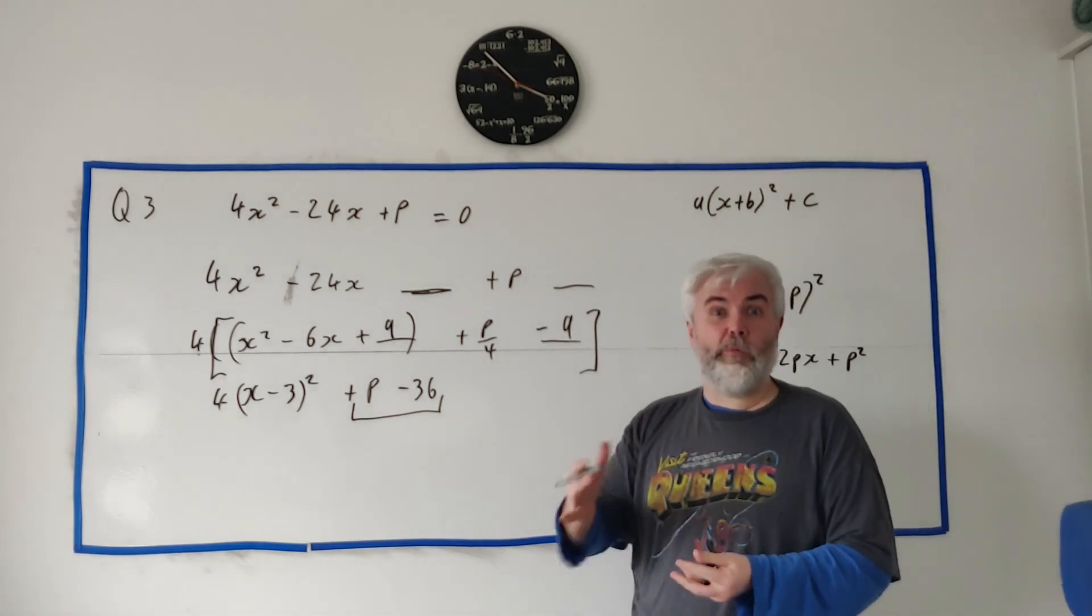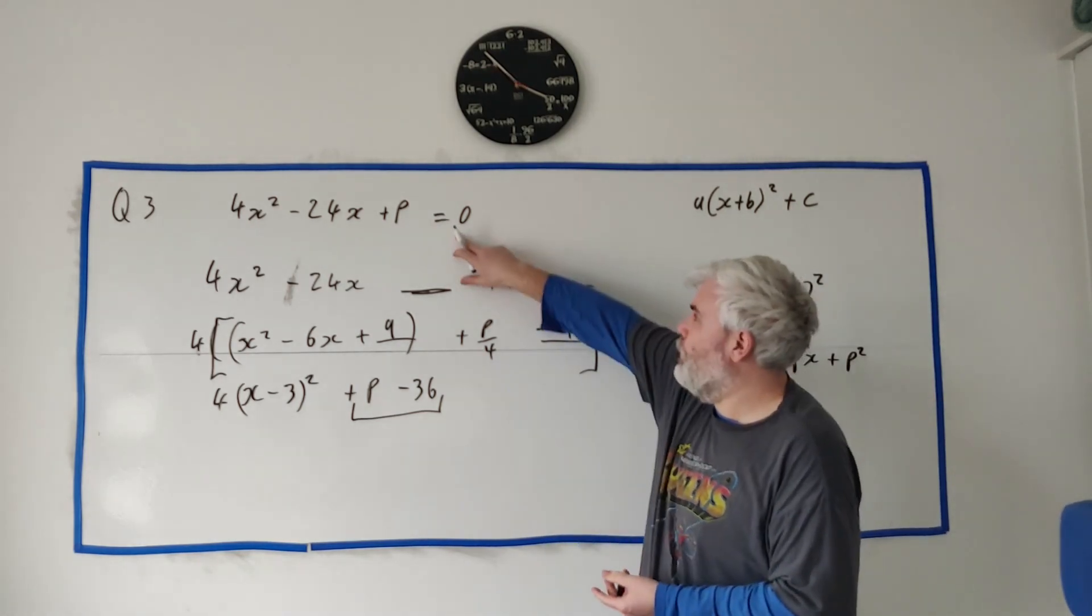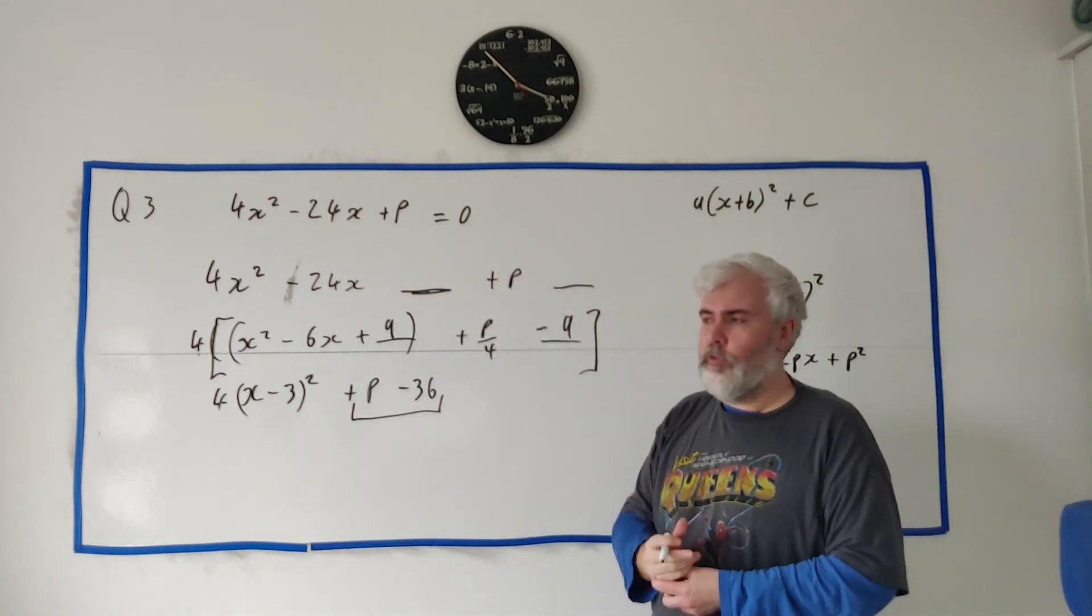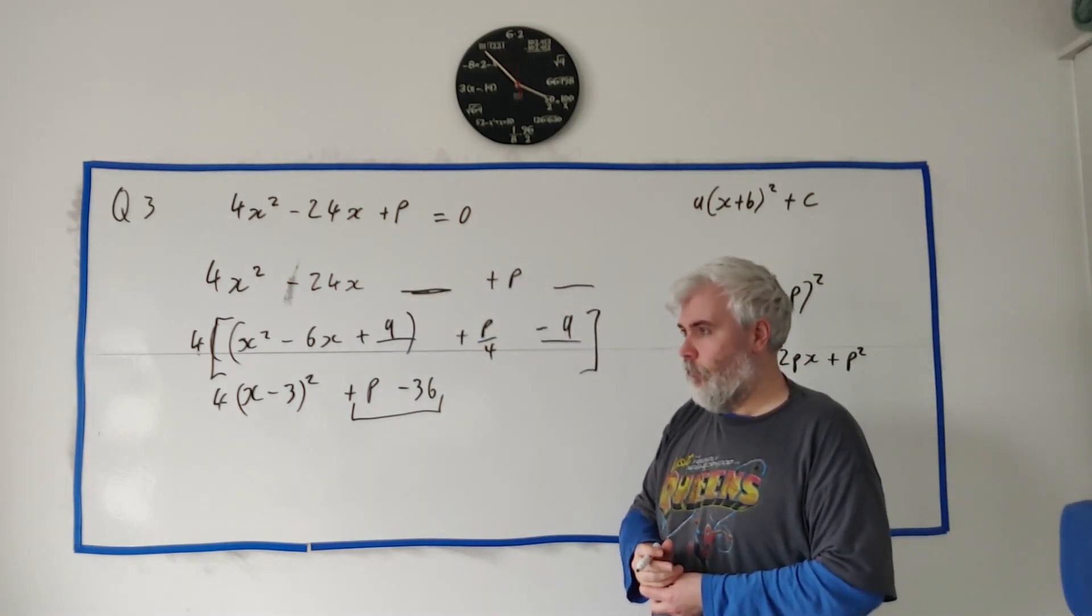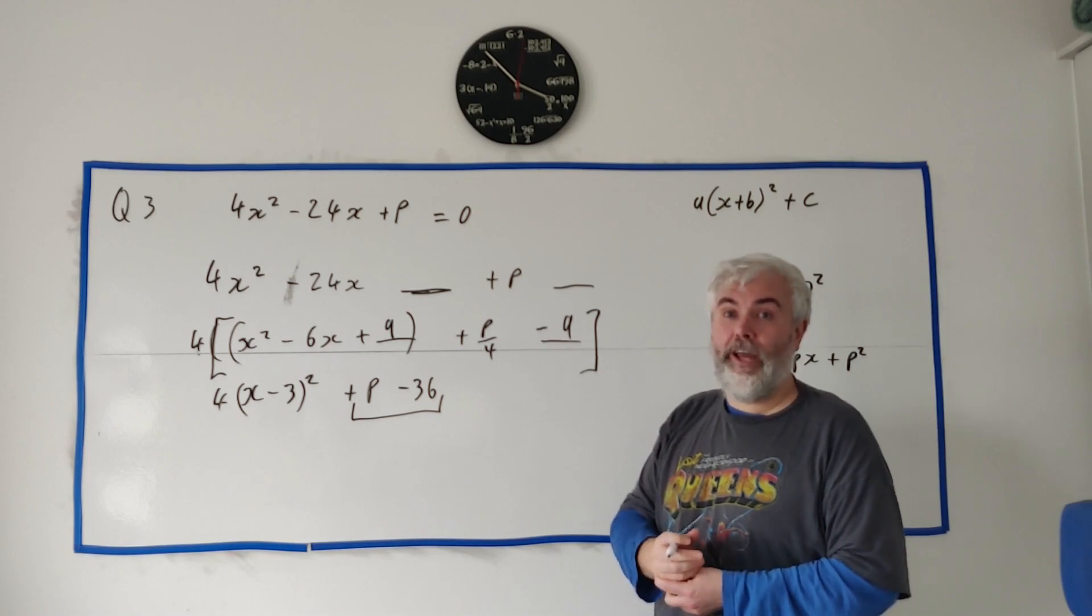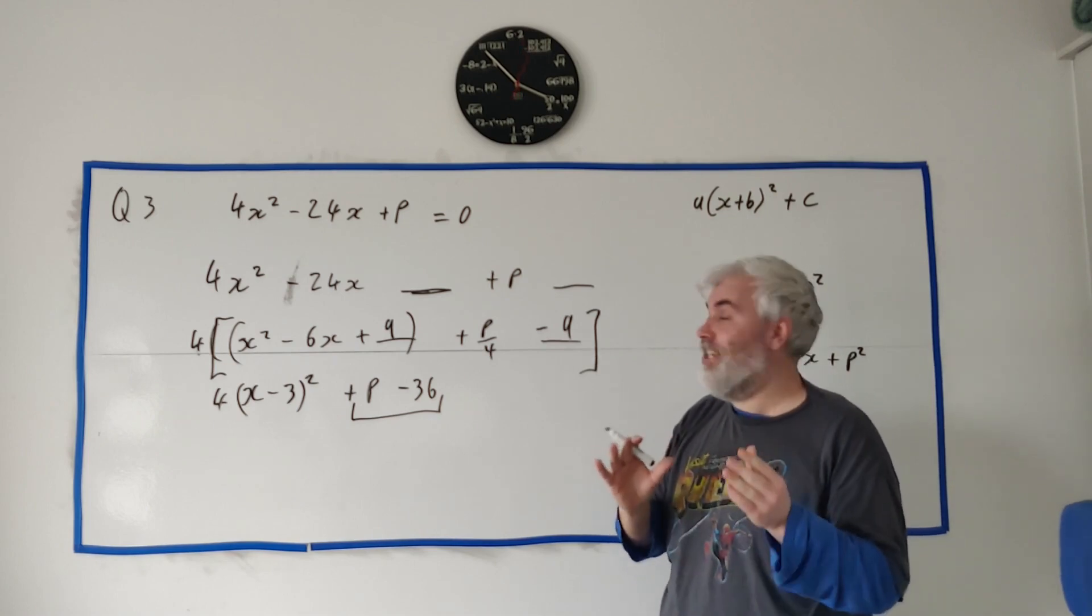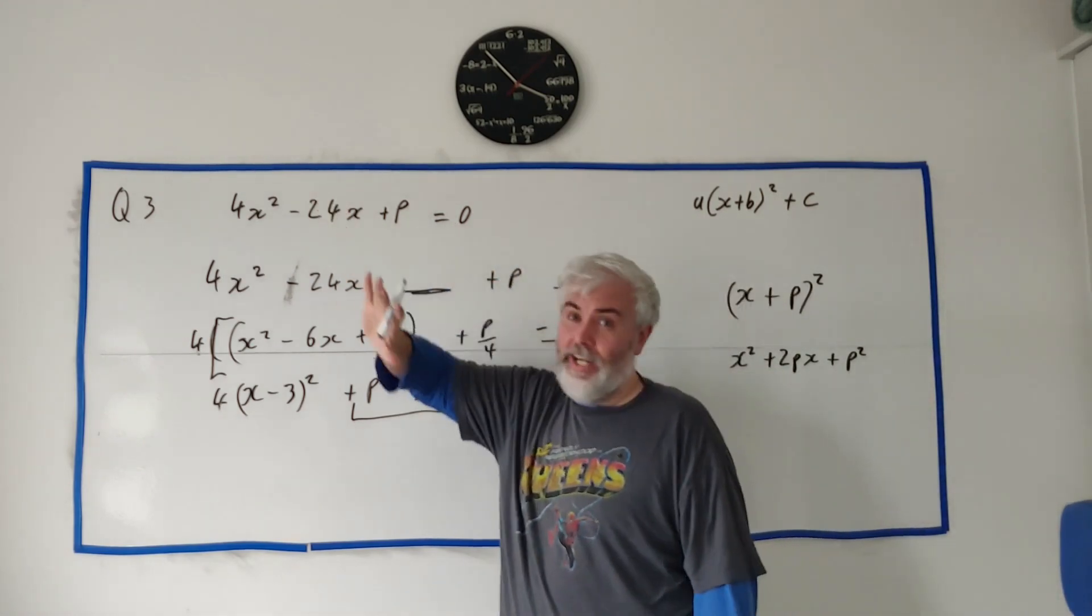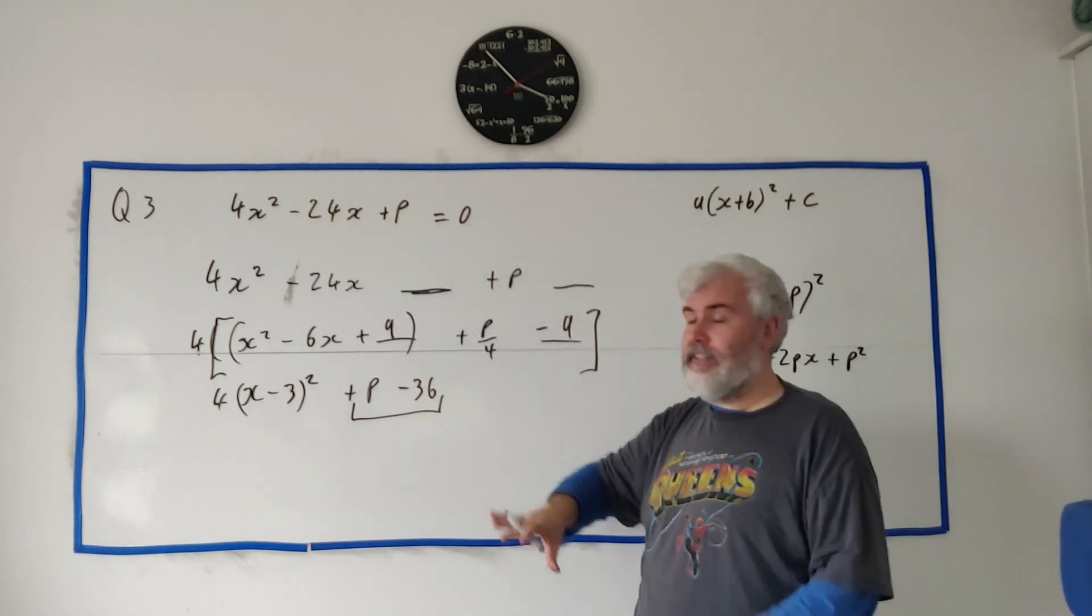But you can also do otherwise. And a lot of students would look at this and go, well, the minus b formula, no real roots. So what is it? b squared minus 4ac. That part, if that's less than 0, there's no real roots. So you could go ahead and do it that way. But let's do it the way they intended.